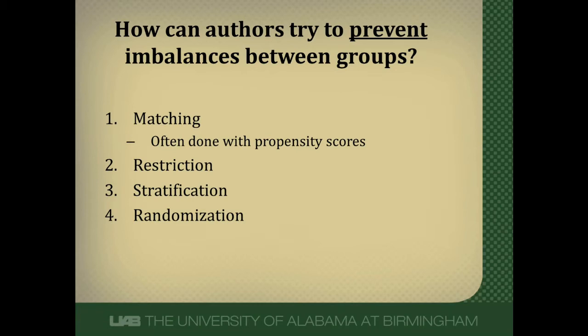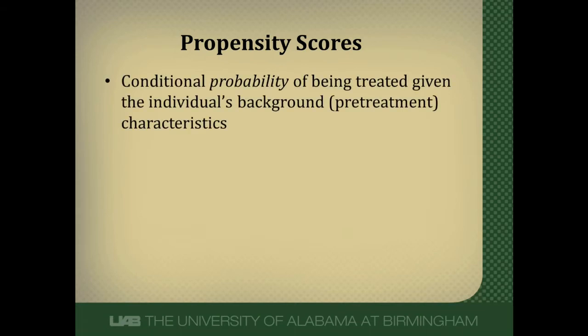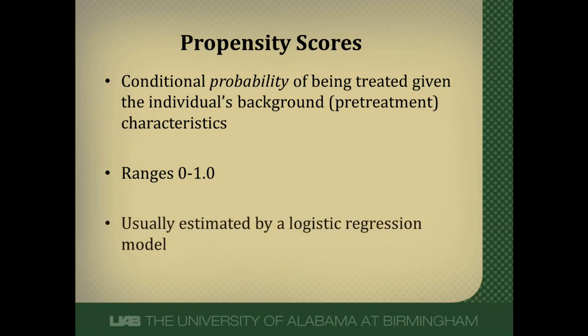These are some of the things that can be done to prevent imbalances between groups. Randomization is the most powerful, but matching — often done with a propensity score — is another option. So what is a propensity score? It's the conditional probability that an individual will be given the treatment based on their background characteristics. It's estimated using characteristics before treatment assignment is made — just a likelihood that they would have been in the treatment group instead of the non-treatment group. Because it's a probability, it can range from 0 to 100%, and it's usually estimated using a logistic regression model.